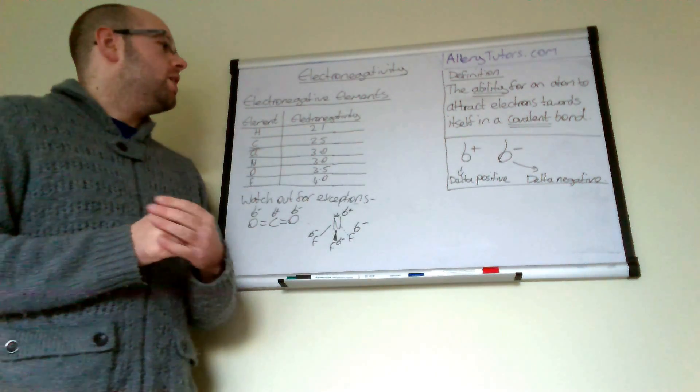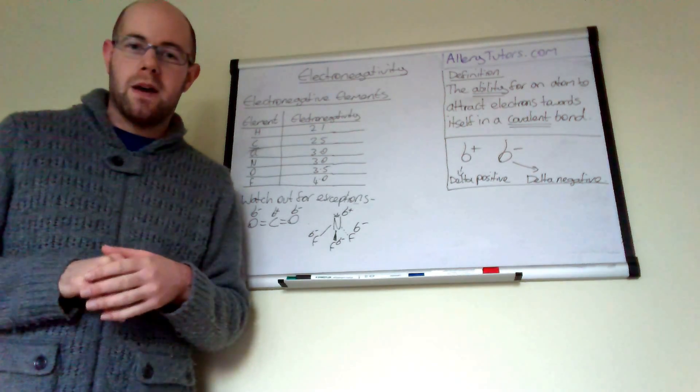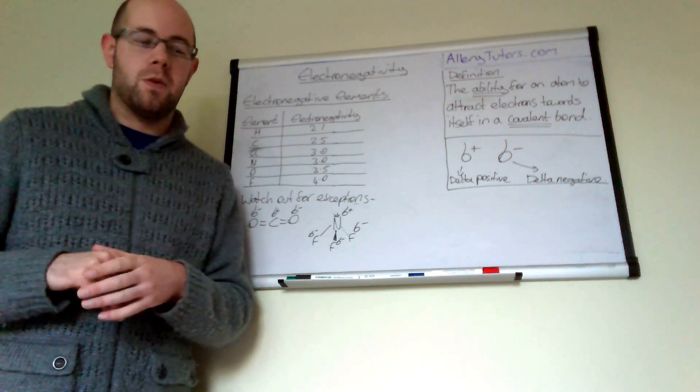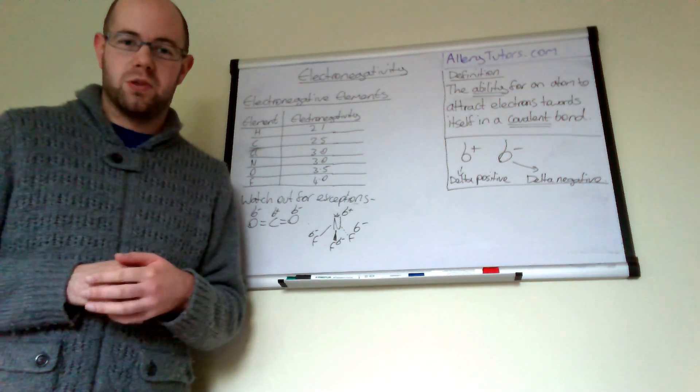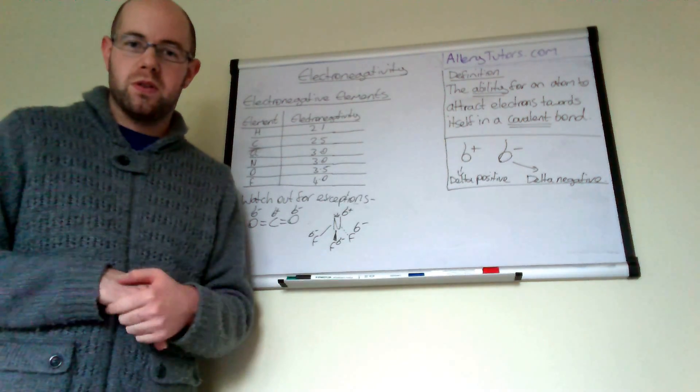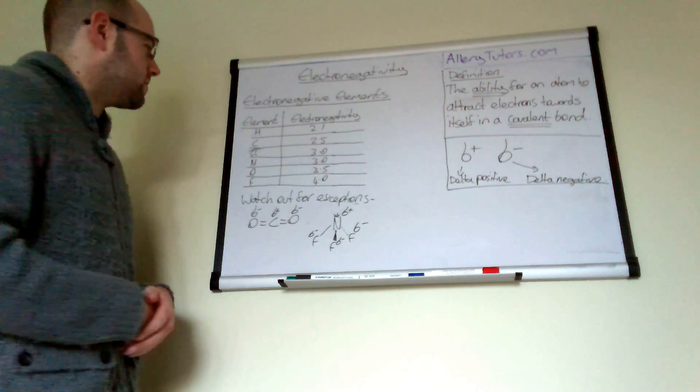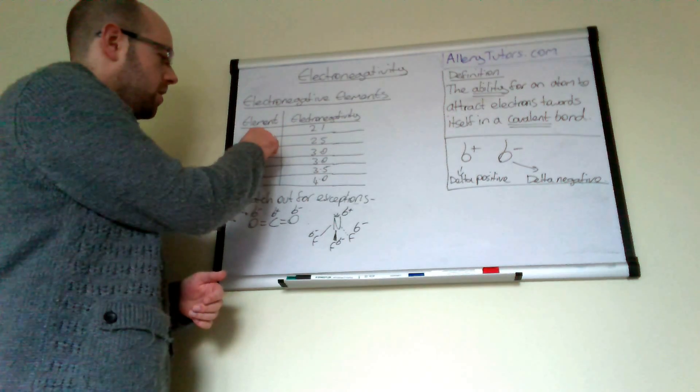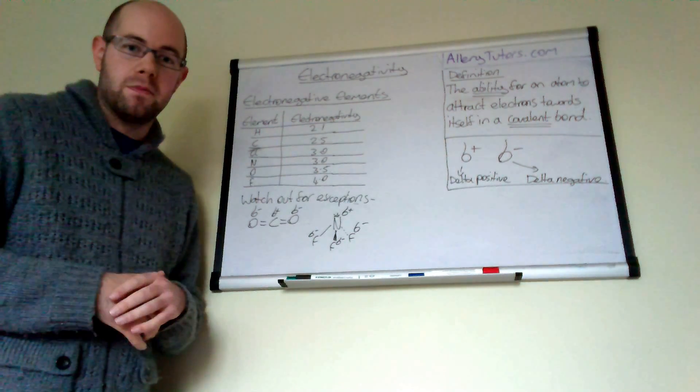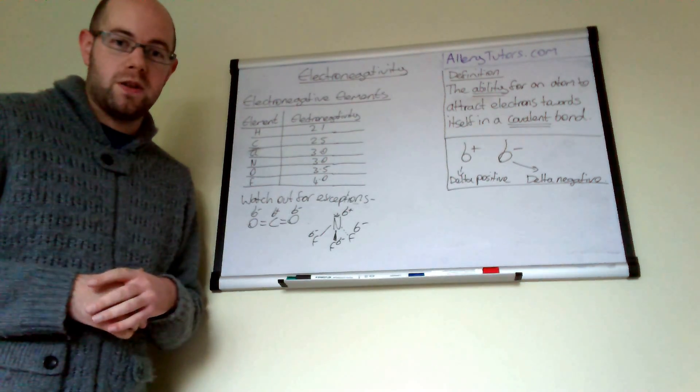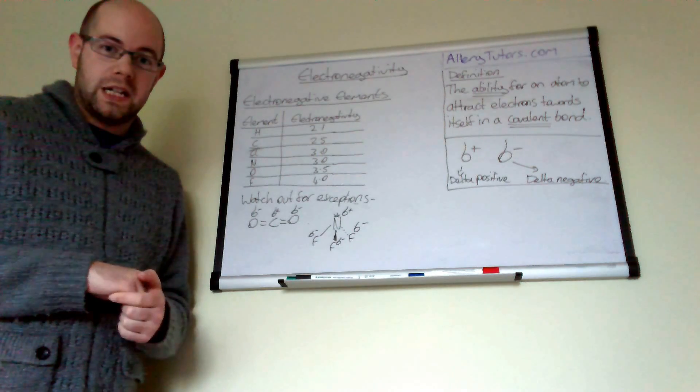There is something called the Pauling scale. Pauling was a scientist who came up with numbers to say how powerful each atom was at attracting electrons towards itself when it's covalently bonded with another atom. He came up with this series of elements—you can see we have hydrogen at the top and we go down to fluorine at the bottom. Fluorine has the biggest number, which means fluorine is actually the most electronegative element, pulling electrons more readily towards itself.